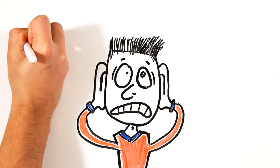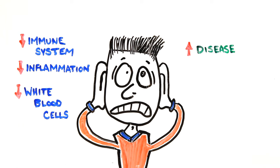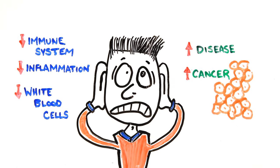The immune system shuts down, inflammation is inhibited, white blood cells are reduced, and susceptibility to disease increases. Some evidence also suggests that prolonged stress may be involved in the development of cancer.